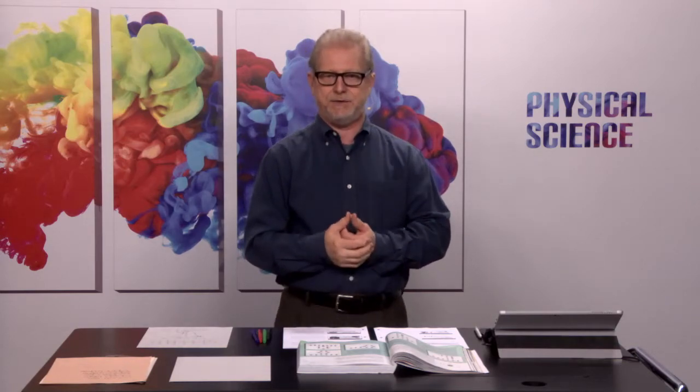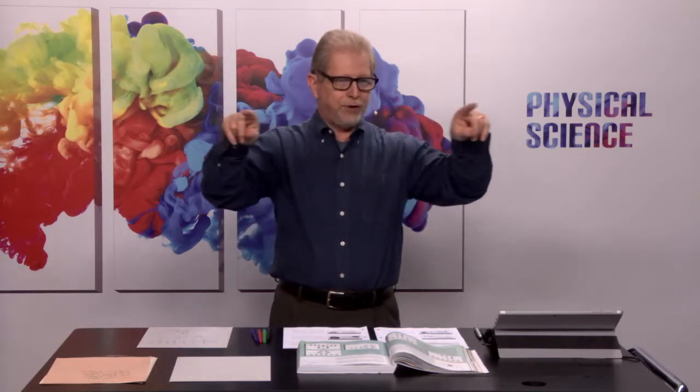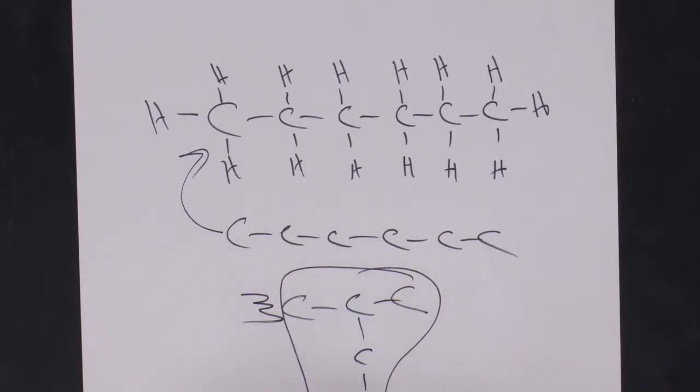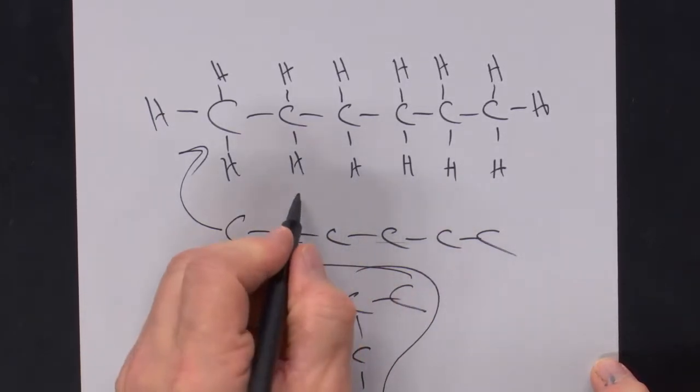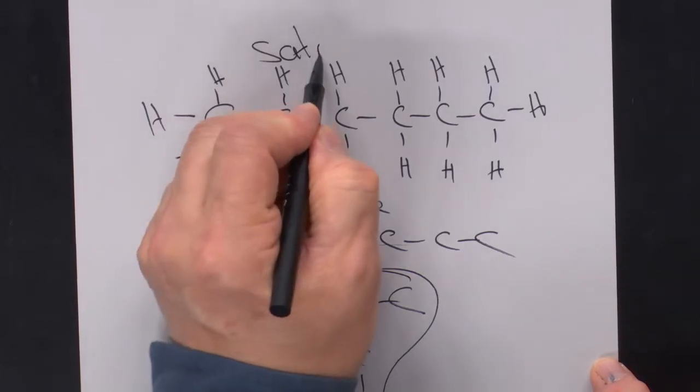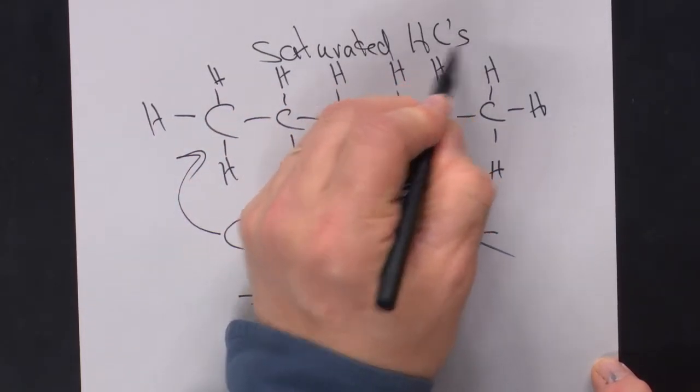We're back to organics and hydrocarbons. These are the simplest organic chemicals because they just have hydrogen and carbon. We had the prefixes meth, eth, prop, but, and then the easier ones: pent, hex. We looked at the first type of hydrocarbon — the alkanes, with the suffix '-ane' — meaning only single bonds between carbons. A six-carbon example is hexane.